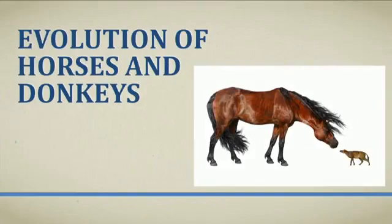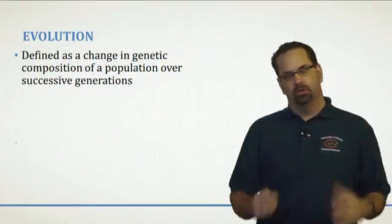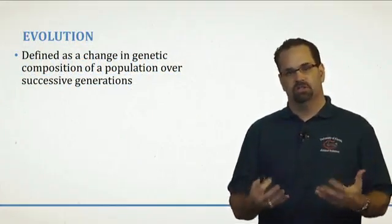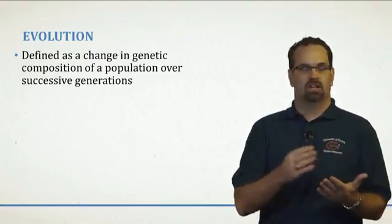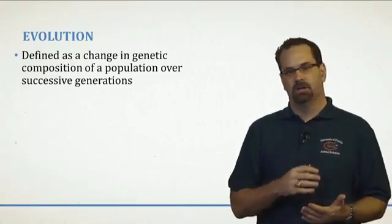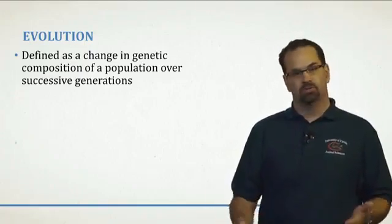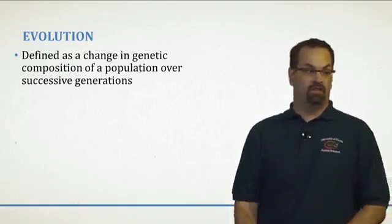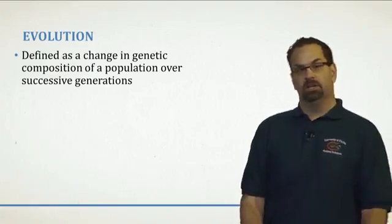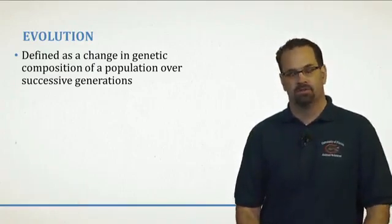Welcome back. In this next talk, we're going to talk about the evolution of horses and donkeys and zebras and the other equids. If we look at evolution, here's the definition: you're looking at the change in genetics over long periods of time. This is something that happens naturally and relatively slowly, and as we'll see in this lecture, over 55 million years is how we can trace back to the earliest relatives of the horse.